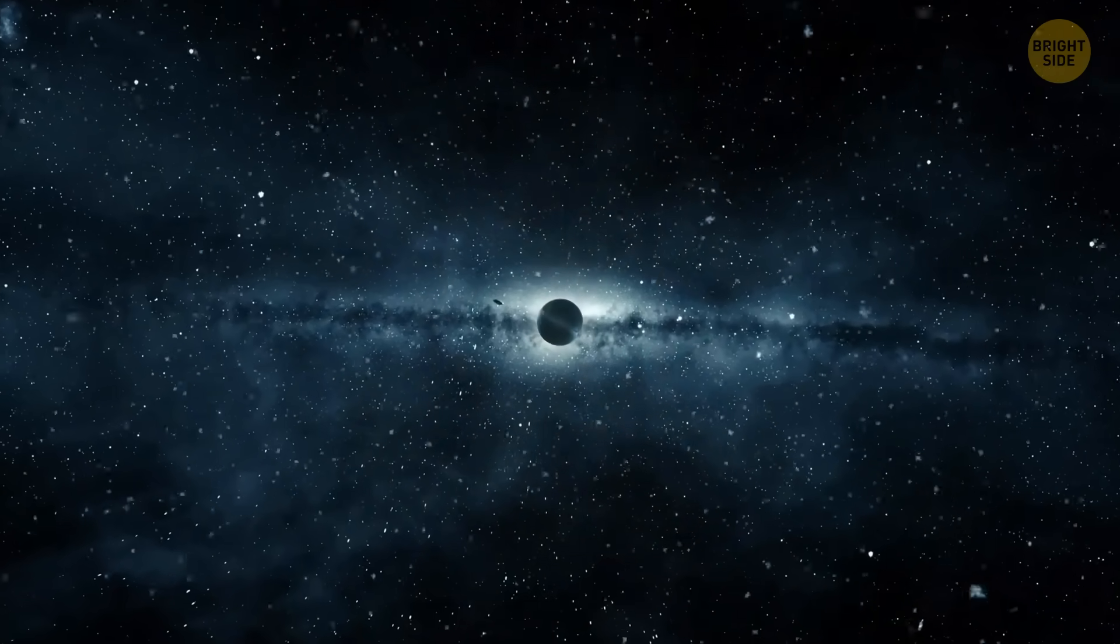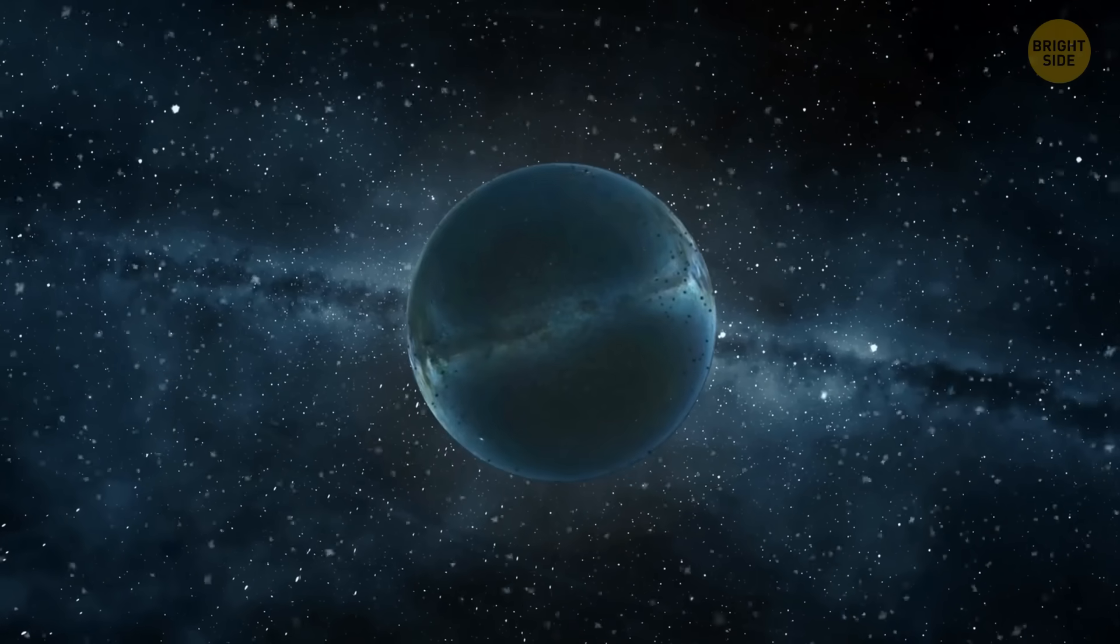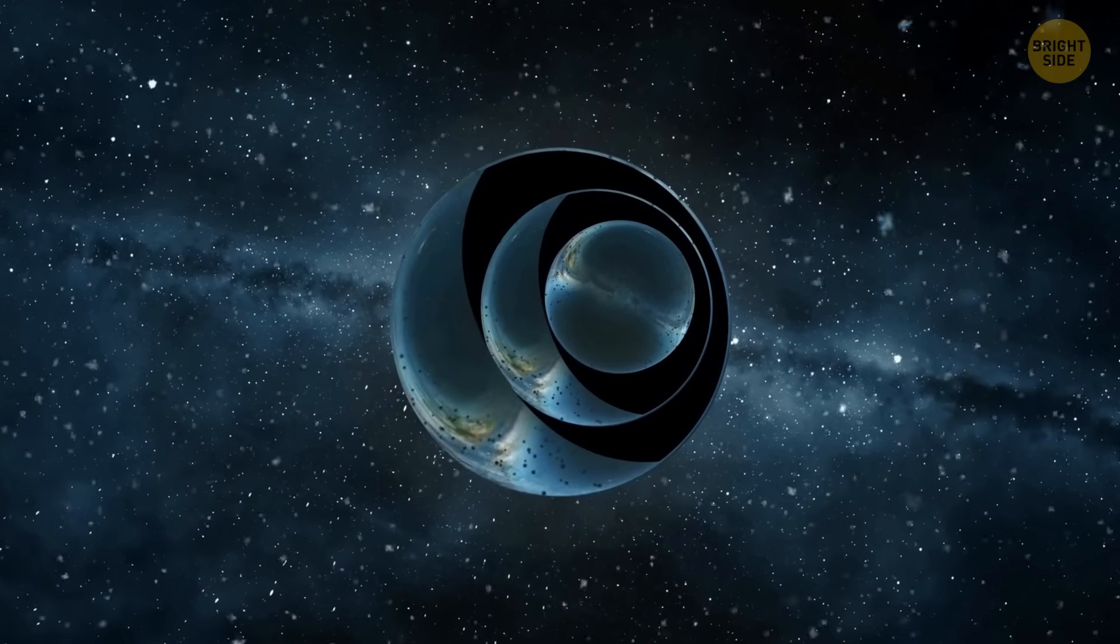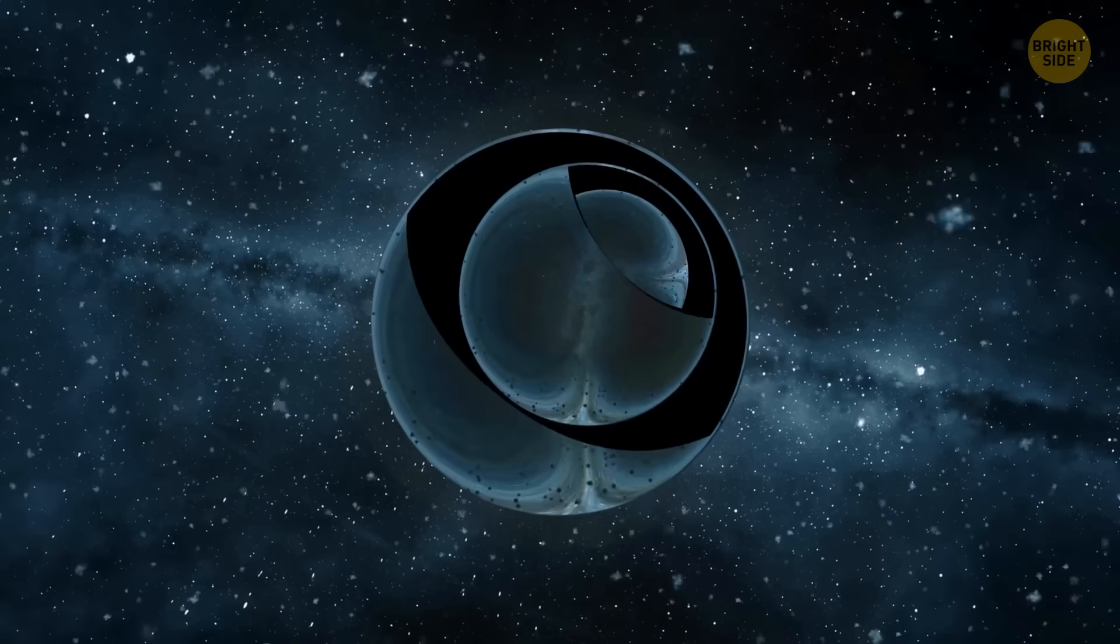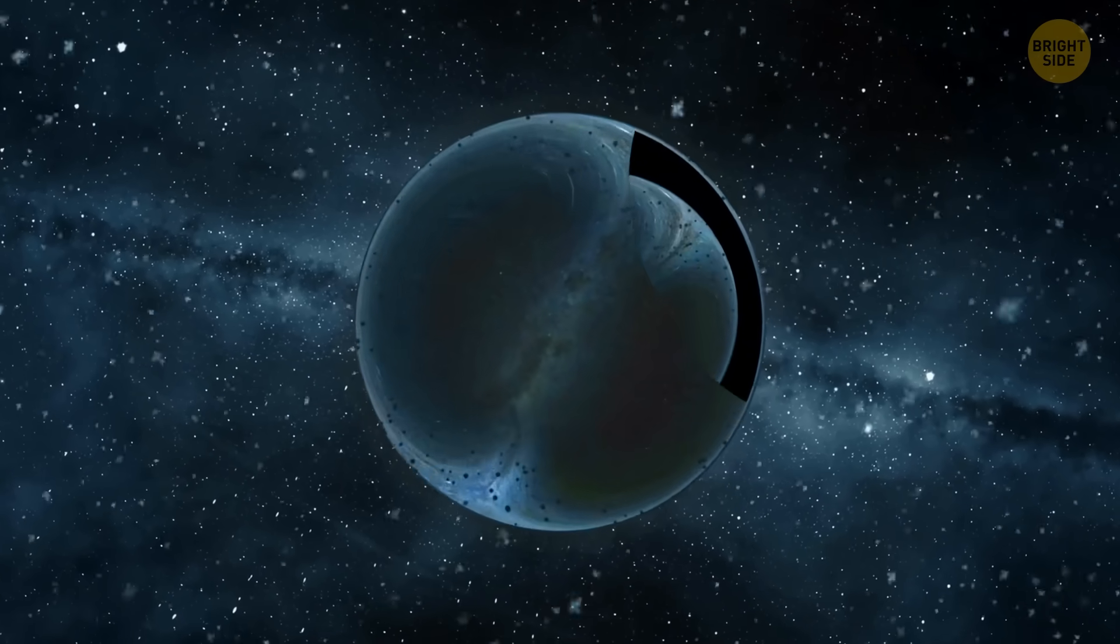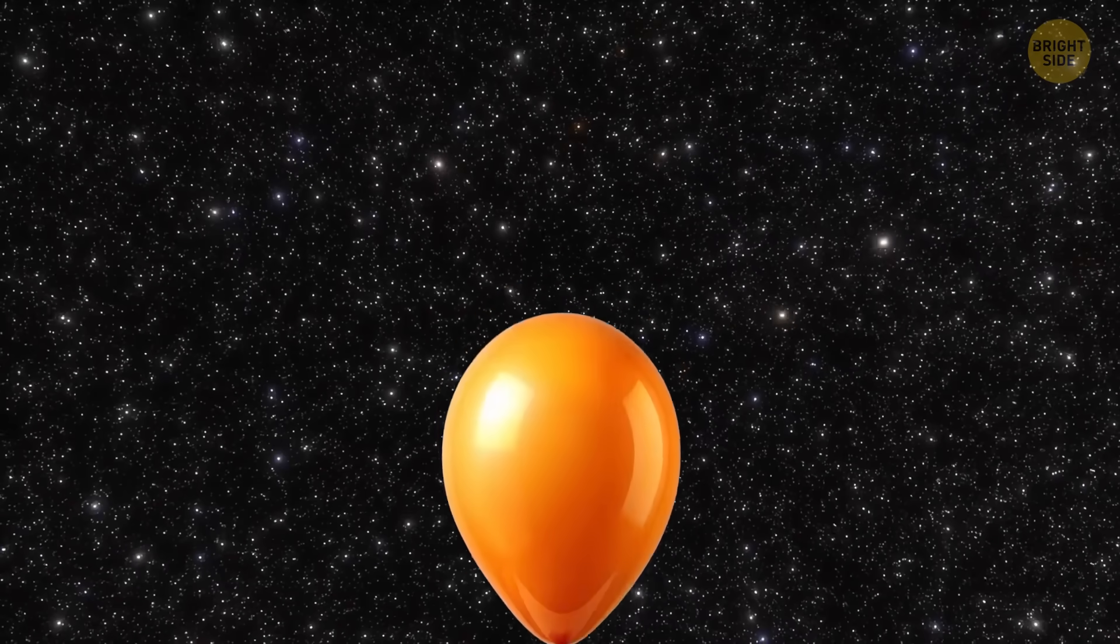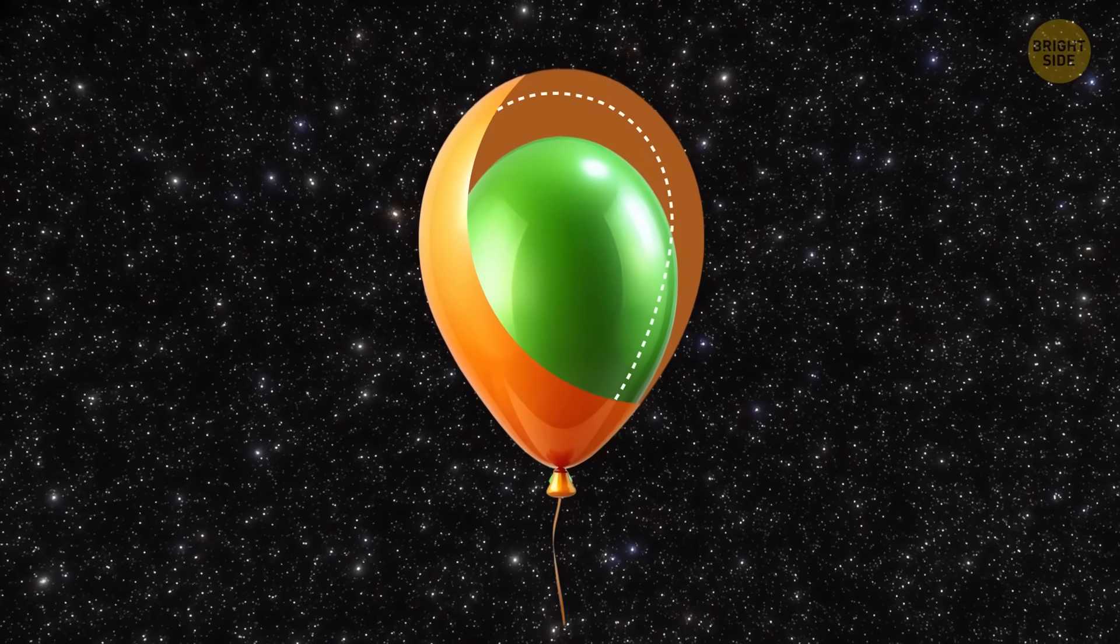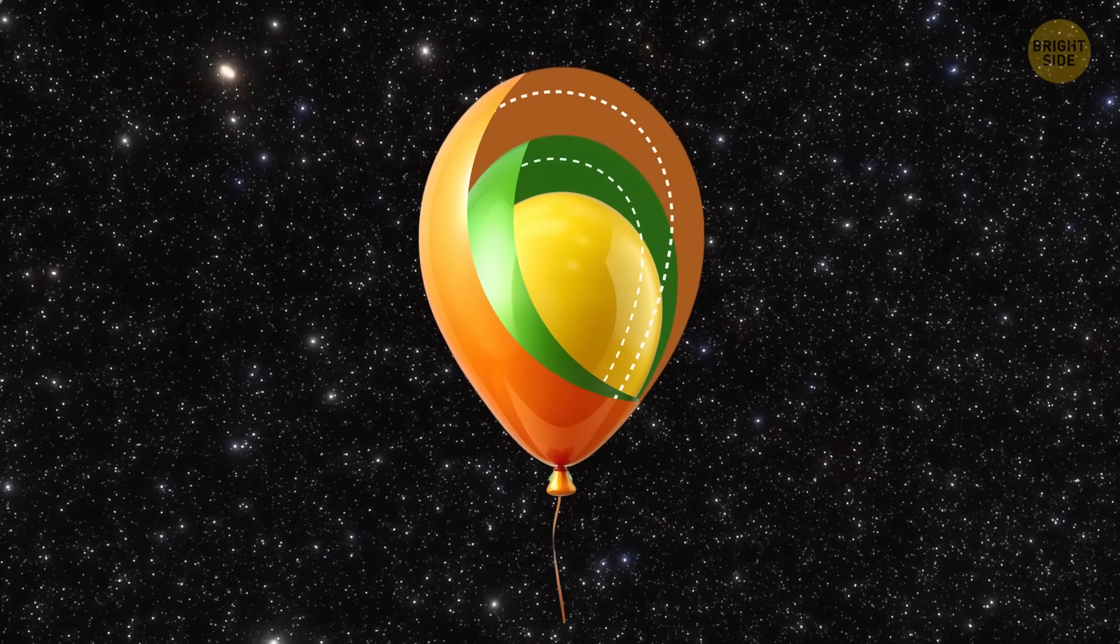The new theory says that gravastars might not be simple lone objects. Instead, they could be stacked one inside another. Each one is like a layer with its own dark energy bubble inside, surrounded by a thin skin of matter. The outermost shell would hold a smaller gravistar inside it, and that one could hold an even smaller one. And so on. It's like a series of balloons, one inside the other. The air pressure in each one of them is stable, evenly spread out. Thanks to that, none of them deflate. They coexist without one popping or collapsing the others.